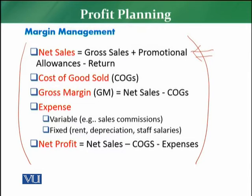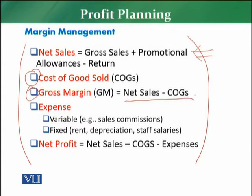The second component is cost of goods sold, which we normally call COGS. For example, if I purchased a product for 8 rupees and I am going to sell it for 10 rupees, those 8 rupees are the cost of goods sold. The third component is gross margin, also called GM. Gross margin is calculated by subtracting COGS from net sales — net sales minus cost of goods sold gives us the gross margin.